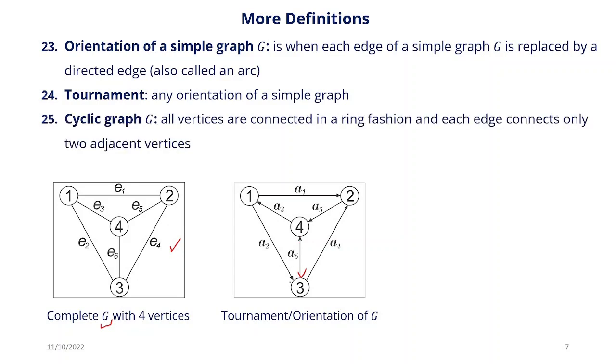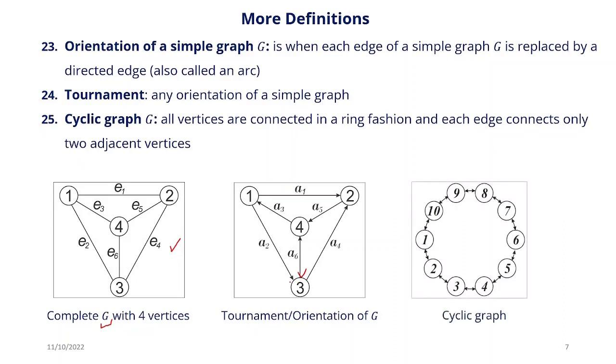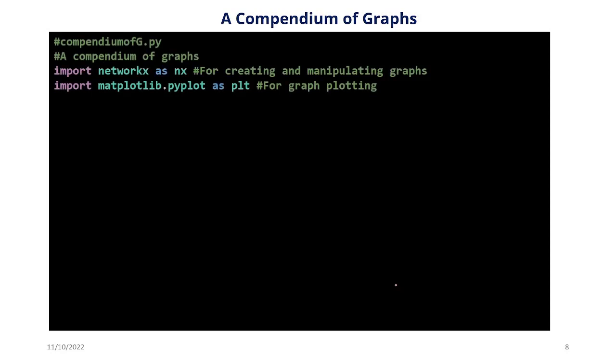A cyclic graph is a graph in which all the vertices are connected in a ring fashion, where each edge connects only two adjacent vertices. It has very practical applications. Now let's look at a compendium of graphs that have been built into NetworkX — predefined graphs we can generate using NetworkX in Python. We'll call this program compendium_of_G.py.